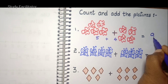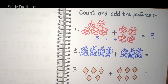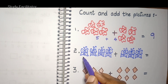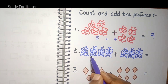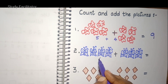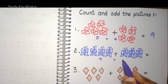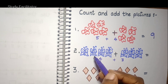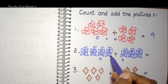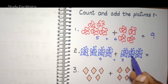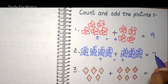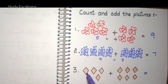Next, butterflies. One, two, three, four — four butterflies on one side. One, two, three — three butterflies on the other side. Totally: one, two, three, four, five, six, seven — seven butterflies in this picture.